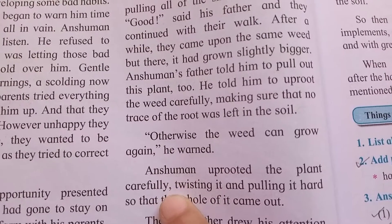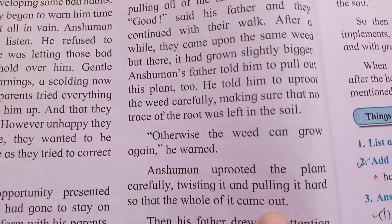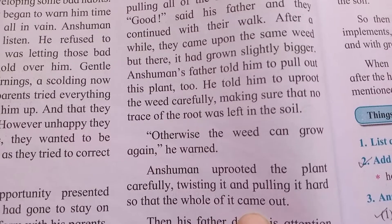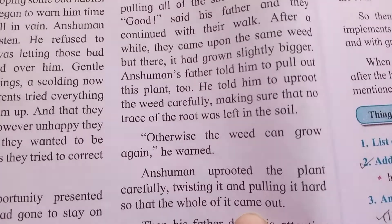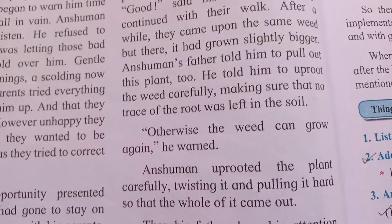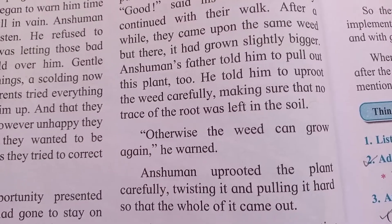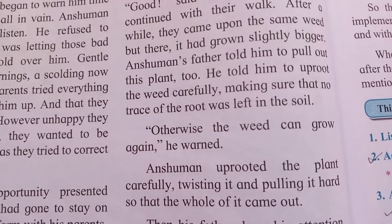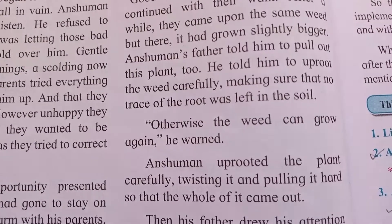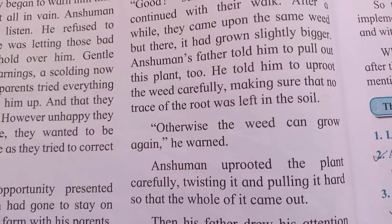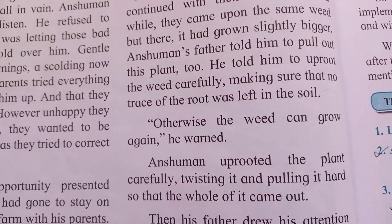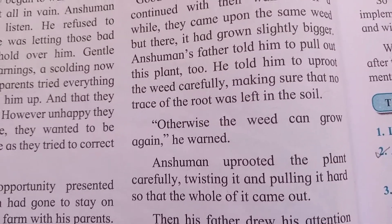Anshuman uprooted the plant carefully, twisting it and pulling it out so that all of it came out. When any plant's deep roots come down it is difficult to uproot it, but he tried twisting it and pulling it hard.